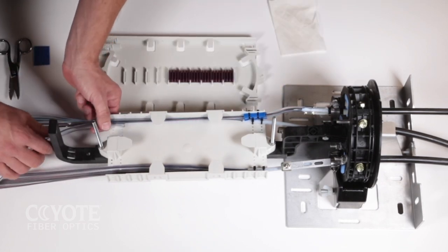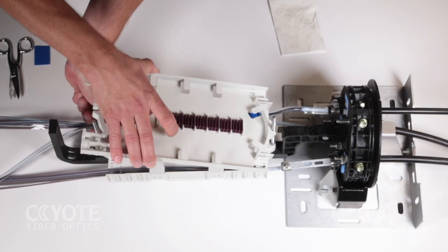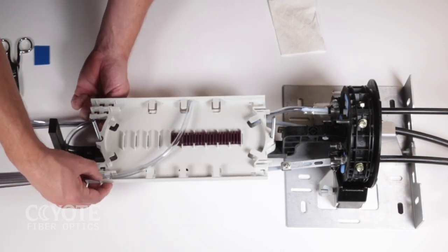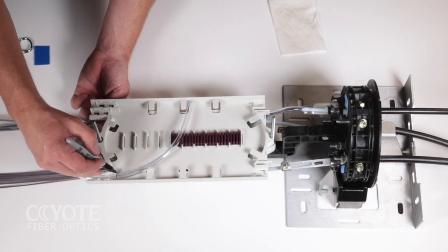Determine the length of transition tube required to route the ribbon in the transition compartment to the splice tray. Mark and cut the transition tube to length.